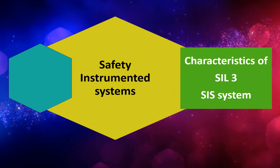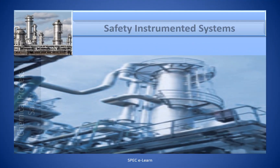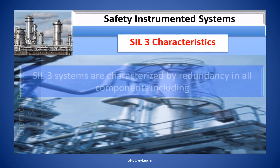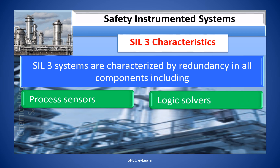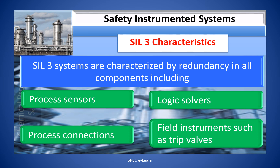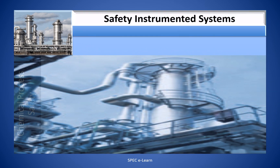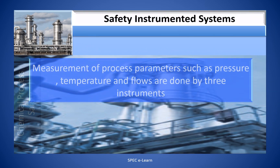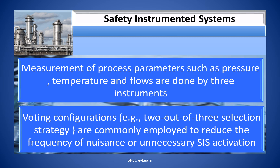Characteristics of SIL 3 SIS systems. SIL 3 systems are characterized by redundancy in all components, including process sensors, logic solvers, process connections, and field instruments such as TRIP valves. Measurement of process parameters such as pressure, temperature, and flow are done by three instruments using voting configurations.